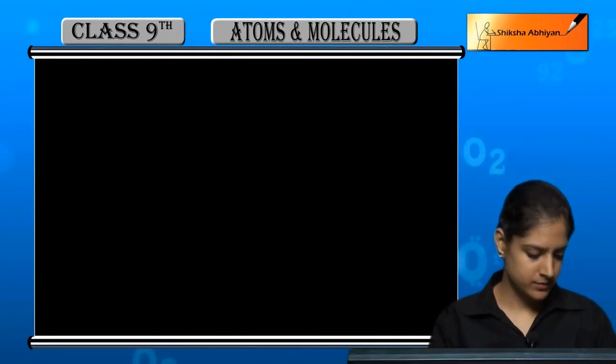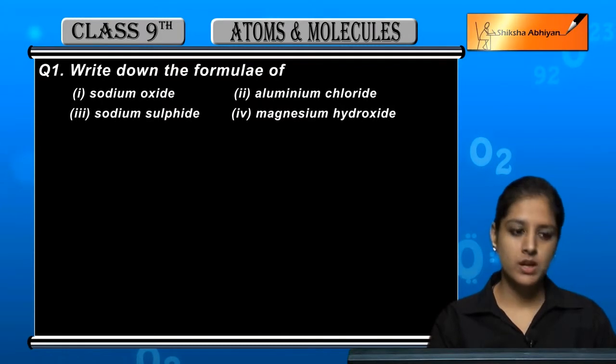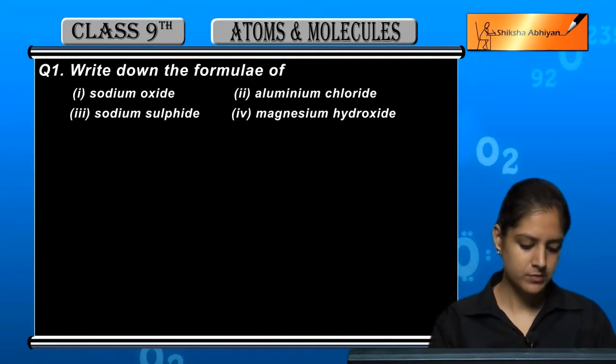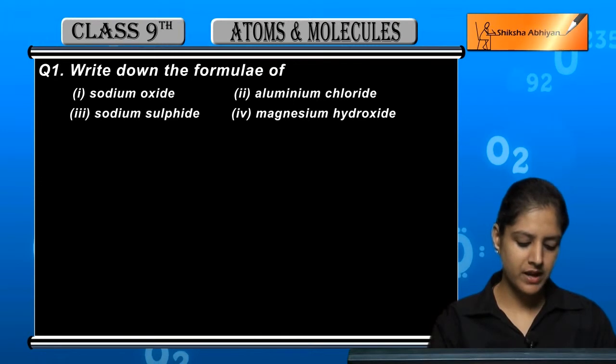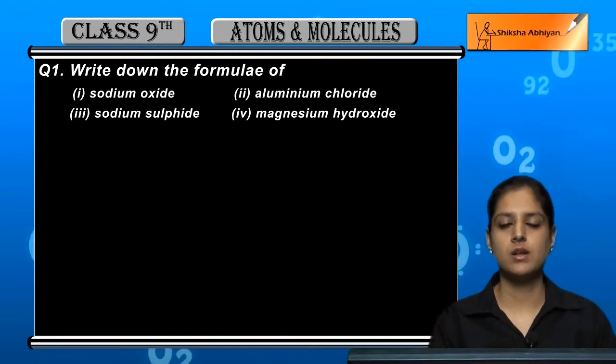So the first question is: write down the formulae of sodium oxide, aluminium fluoride, sodium sulphide, and magnesium hydroxide in chemical formulae.